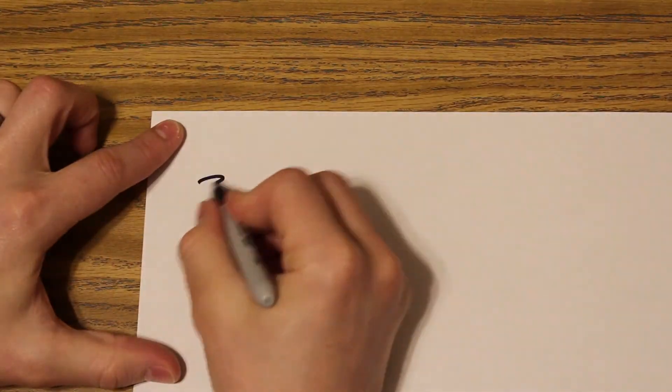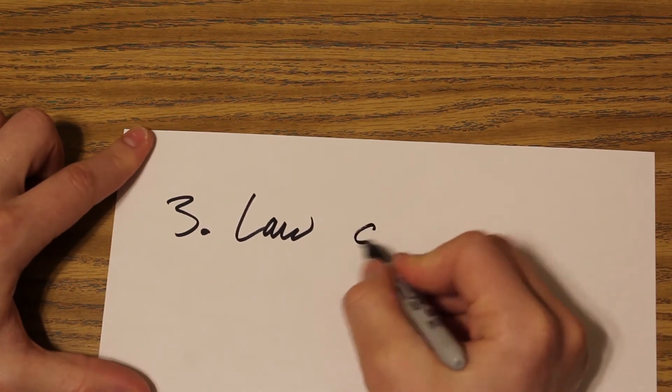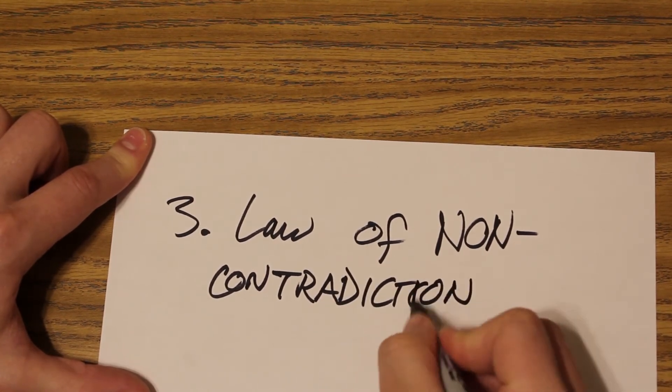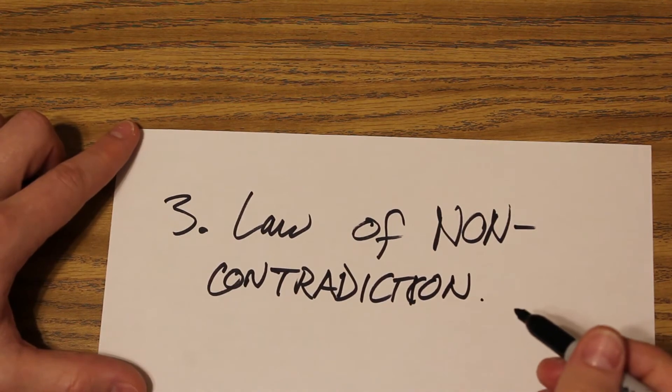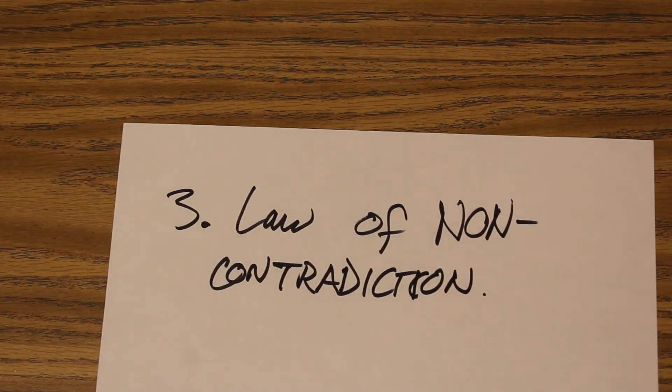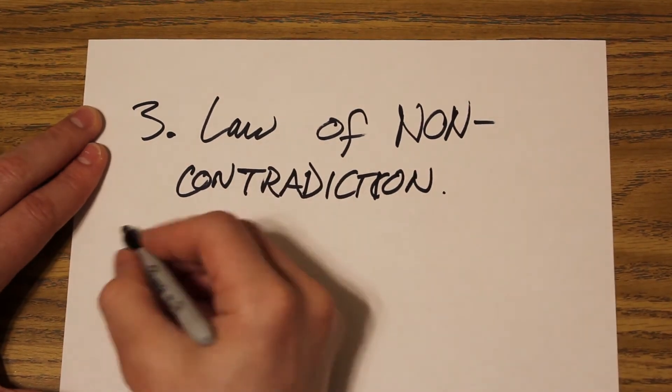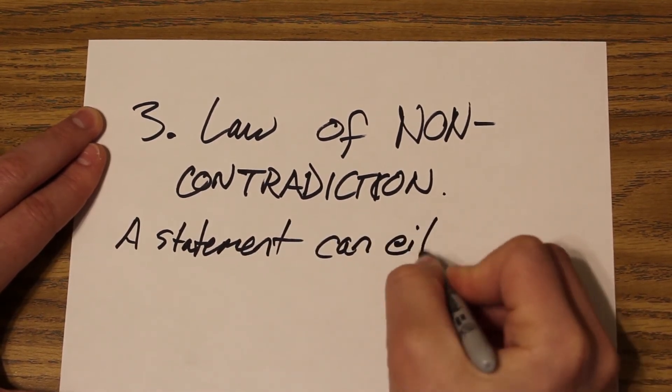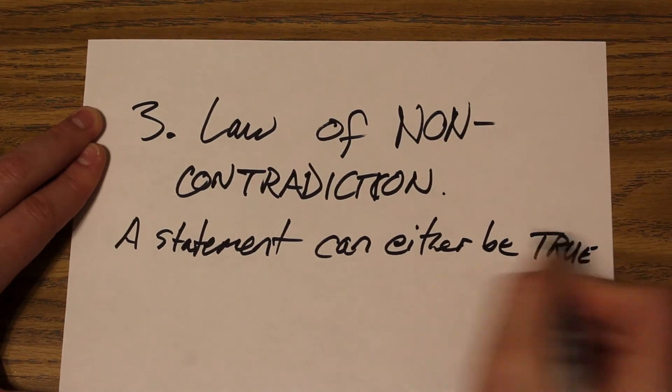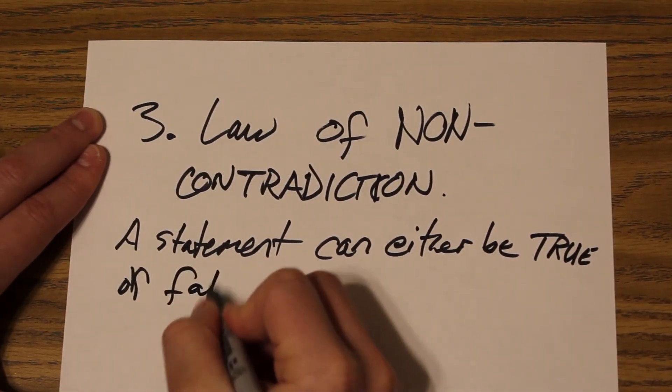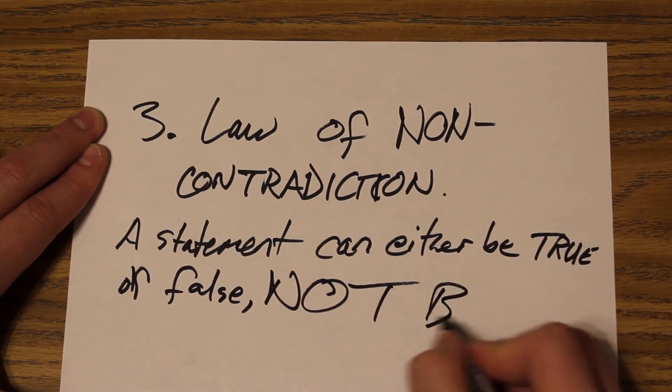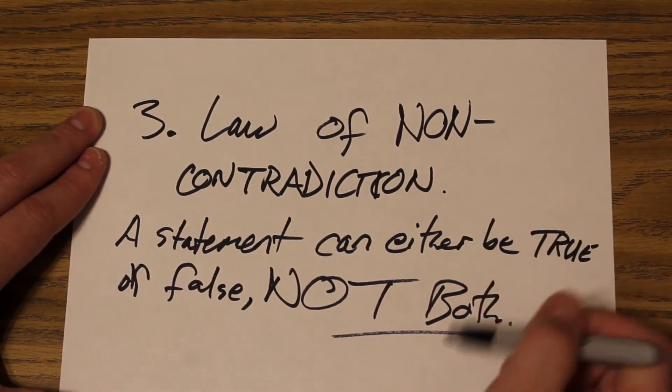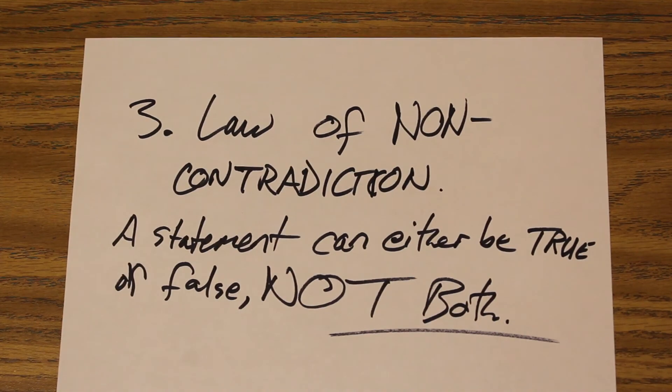The third law here is the law of non-contradiction. A contradiction would be if something was both true and false. If it's both, it would contradict. So it's not allowed to be both either. In the same way that the law of excluded middle said you're not allowed to be in-between, this one says a statement can either be true or false, not both at the same time. It can't be both true and false because that contradicts. So this is the law of non-contradiction. Those are our three laws of logic.